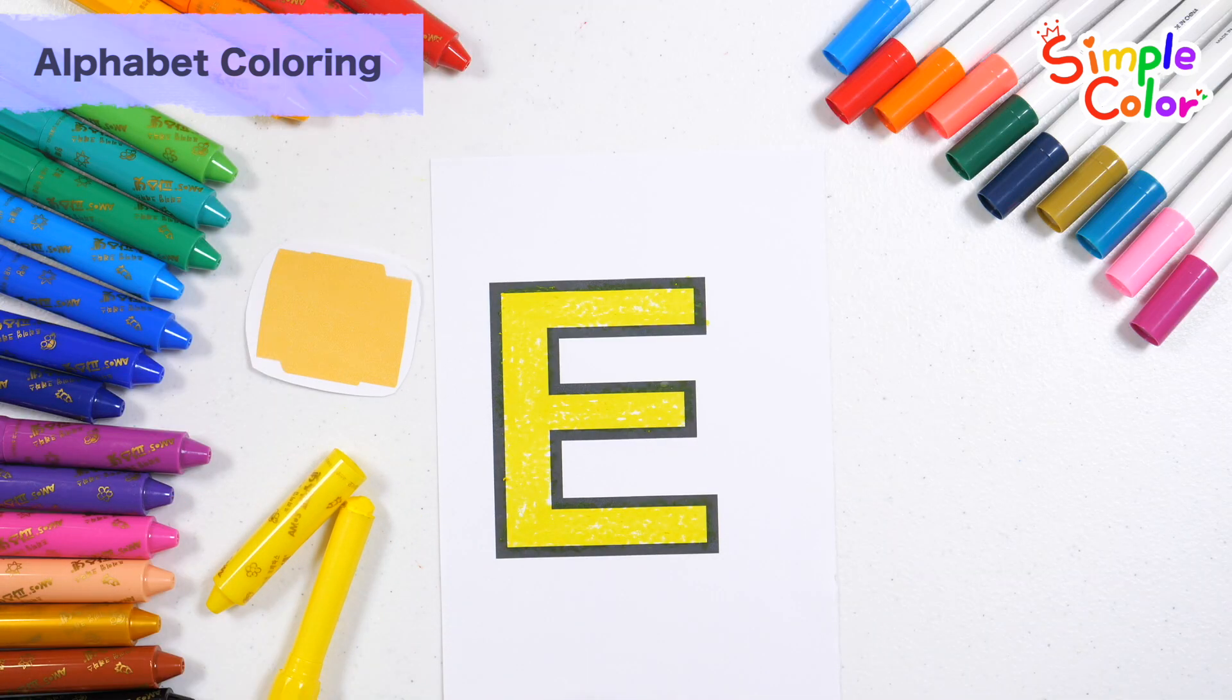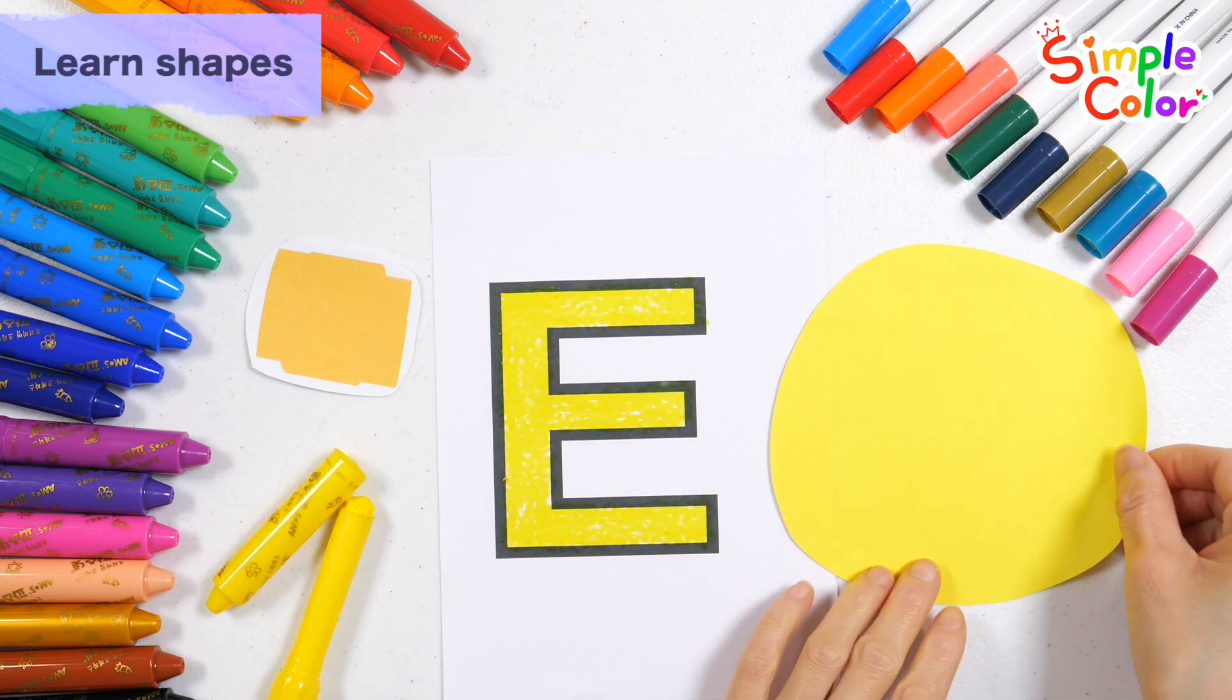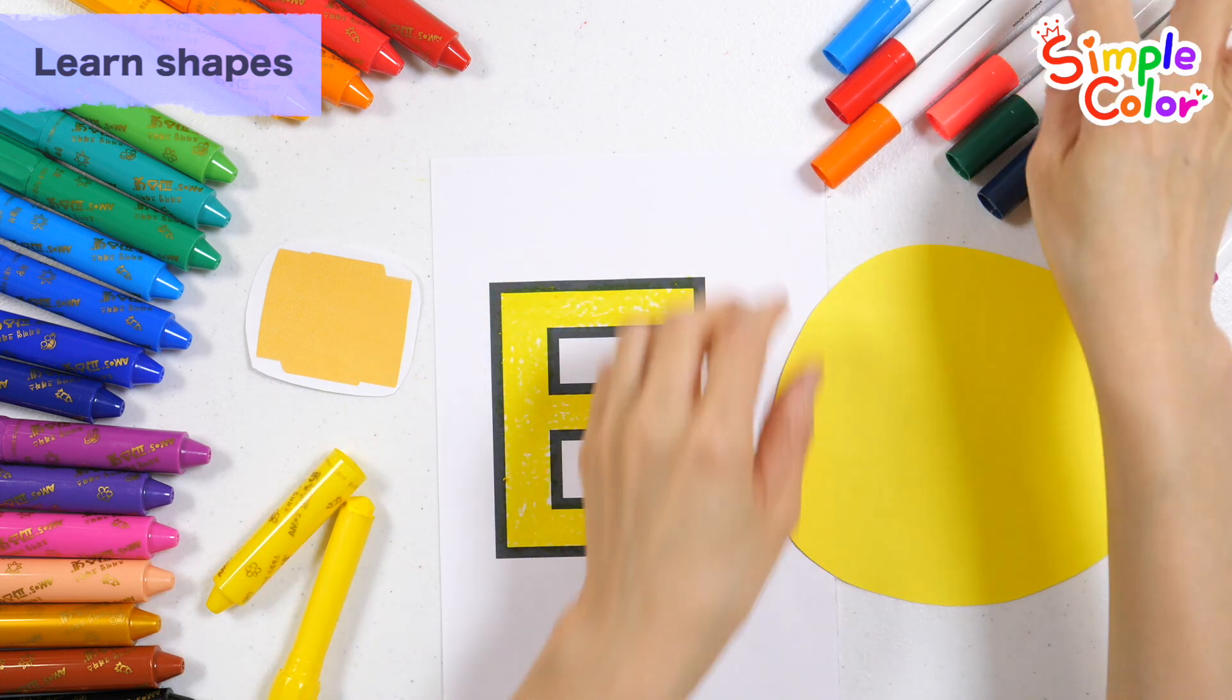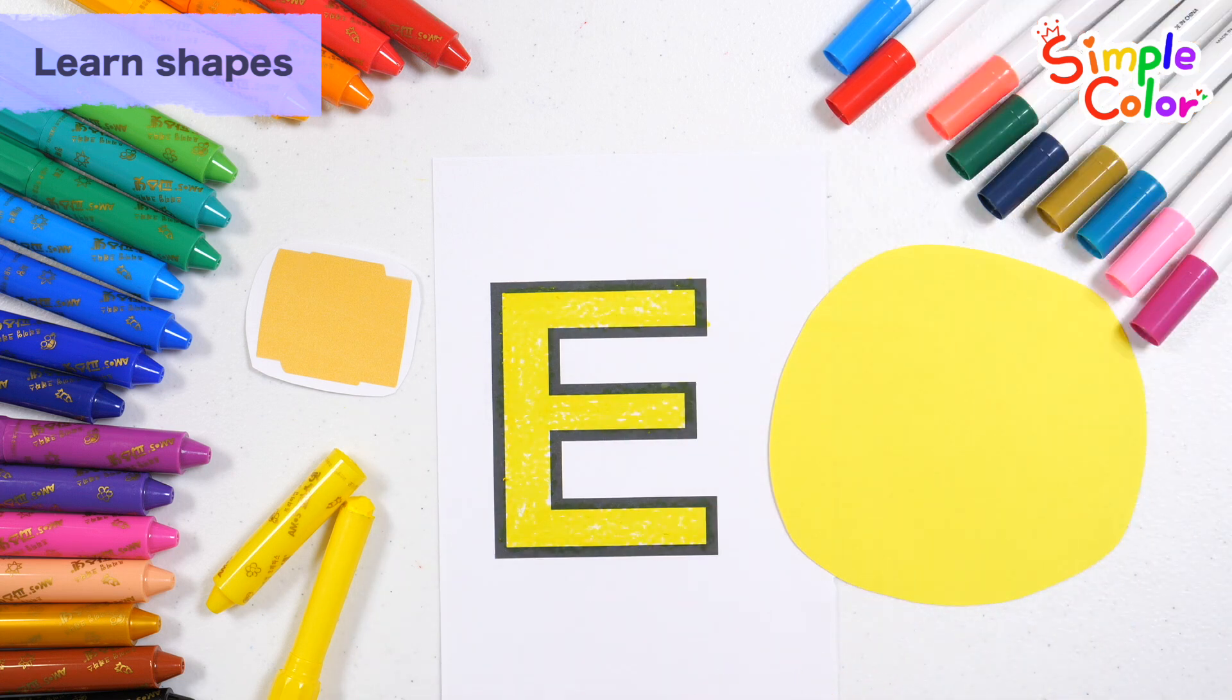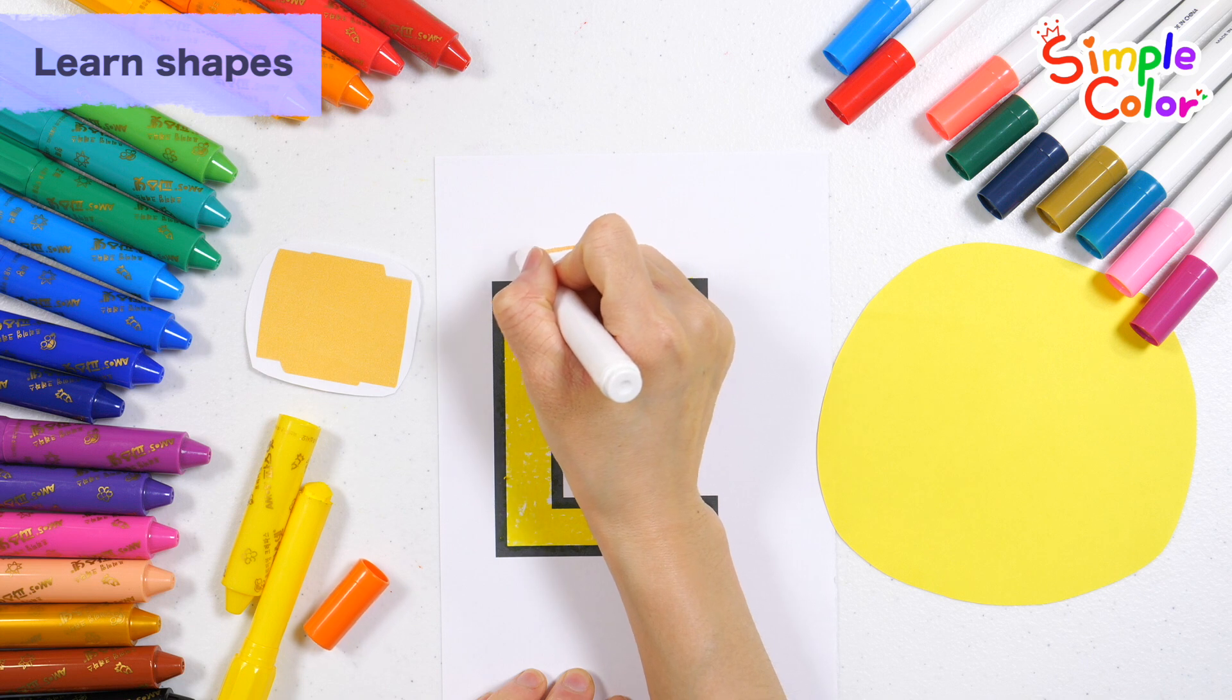Great job! It's a circle. Shall we make the alphabet into a circle shape? Draw a circle with an orange pen.